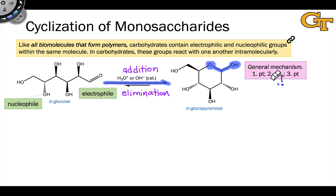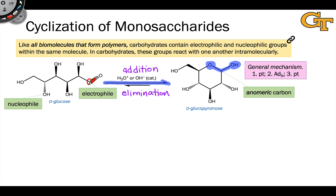The carbon atom at the center of the hemiacetal functional group is also known as the anomeric carbon. There are a few things worth pointing out about anomeric carbons, as these are among the most important carbons within monosaccharides. Notice that in both the open chain form and the closed or cyclic form, the anomeric carbon has an oxidation state of plus two because it bears two bonds to oxygen. In the open chain form, this carbon is part of an aldehyde or ketone, and in either case that carbon is not a stereocenter because it's trigonal planar.